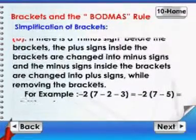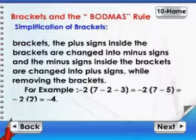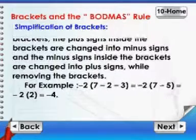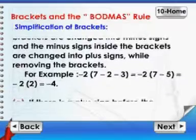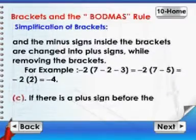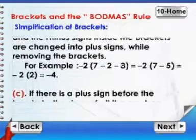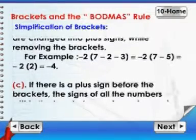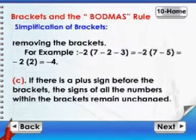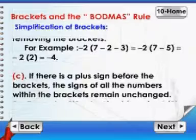For example: -2(7 - 2 - 3) = -2(7 - 5) = -2(2) = -4.